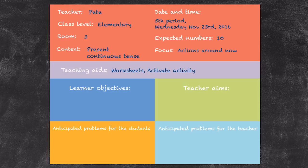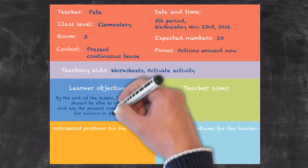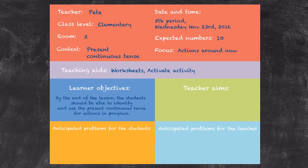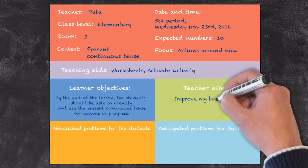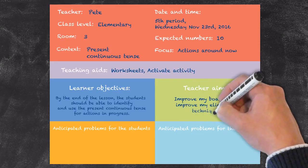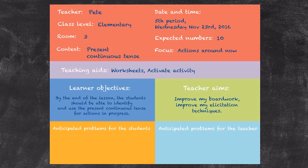We've got our learner objectives and personal aims. The learner objectives are what we're hoping the students will be able to do after the lesson has been taught. We're hoping that by the end of this lesson the students will be able to both recognize and use the present continuous tense. The personal aims for this particular lesson are to improve my board work and my elicitation techniques from the students.